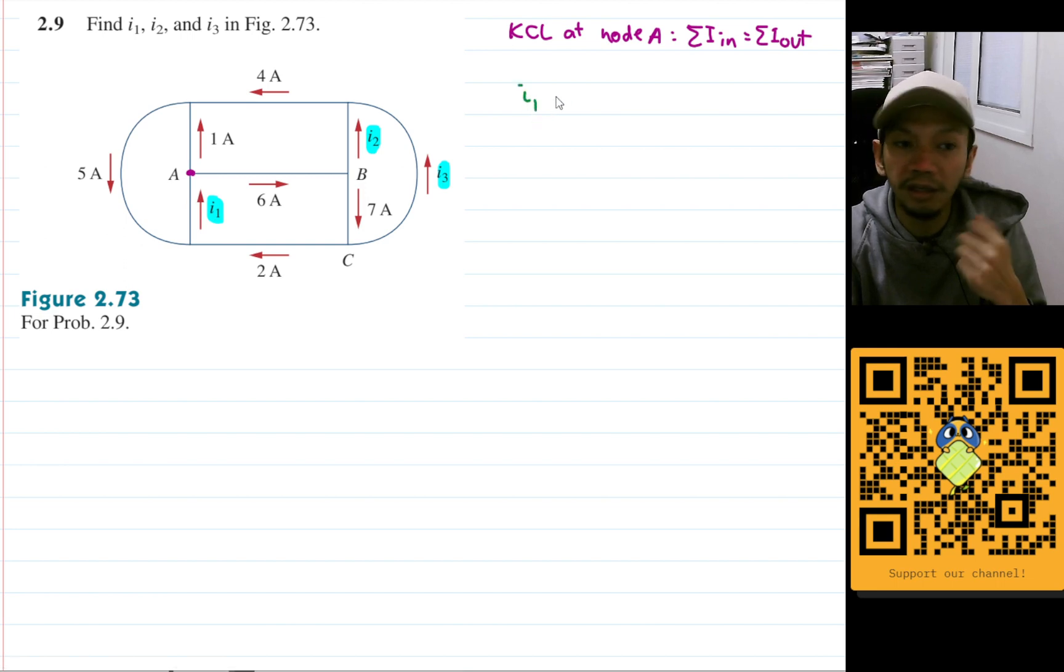i1 goes in and the other currents are going out, so let's put the equal sign. This one is 1 and that one is 6 amperes, so we will get i1 here will be 7 amperes. That is the value of i1.